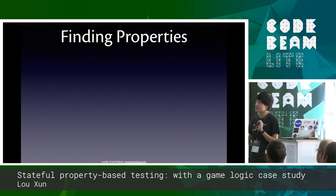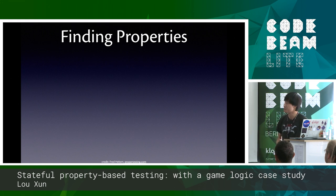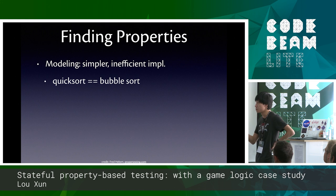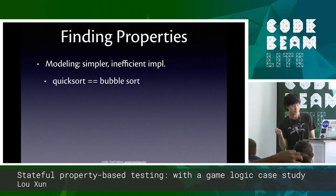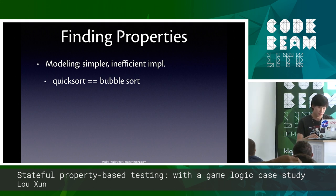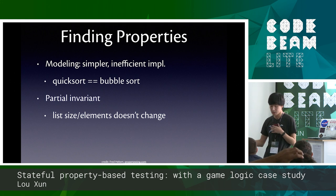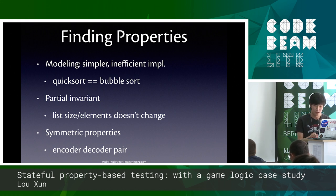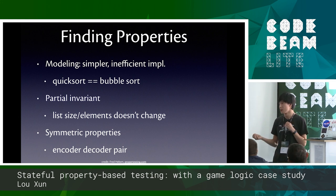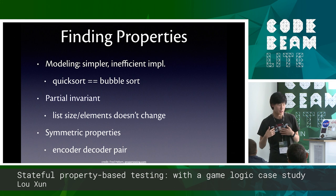So how can we find useful properties? There are many interesting materials, and there's even a talk at this ElixirConf about picking properties — I recommend you watch it. But I'll go over a few things. First, what we call modeling: we use a simpler or inefficient implementation to test the real, often more complex, implementation. For example, we can use bubble sort to test quicksort. Another one is testing partial invariants — for example, after sorting a list, the size of the list or the elements shouldn't change. And finally there's an interesting category called symmetric properties, which are useful when you have an encoder and decoder: you take anything A, pass it through the encoder and decoder, and expect the same A to come back.